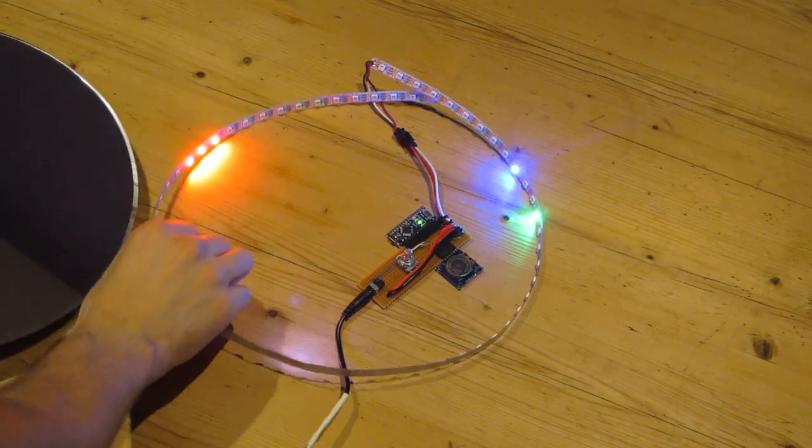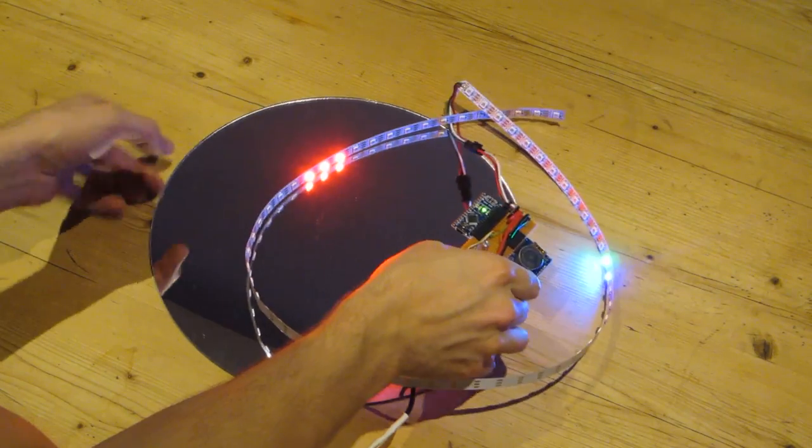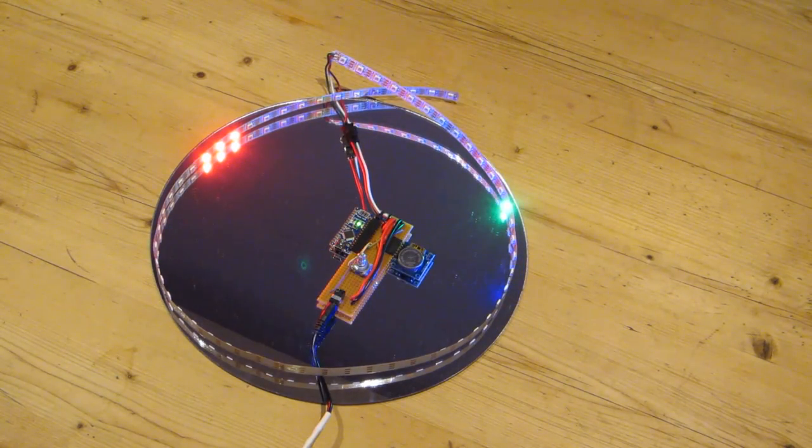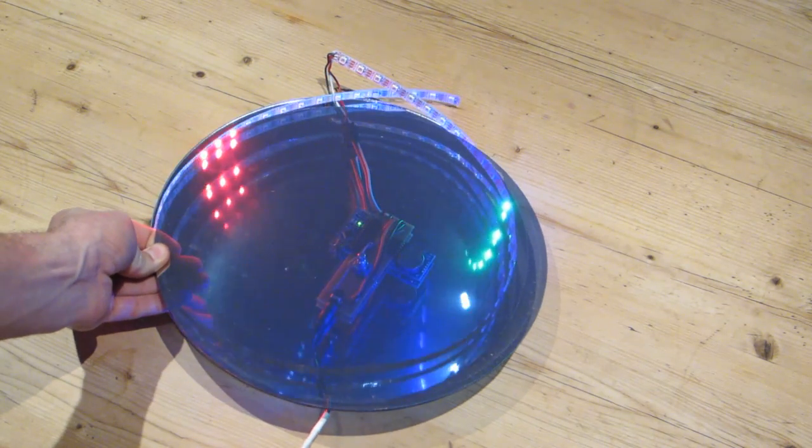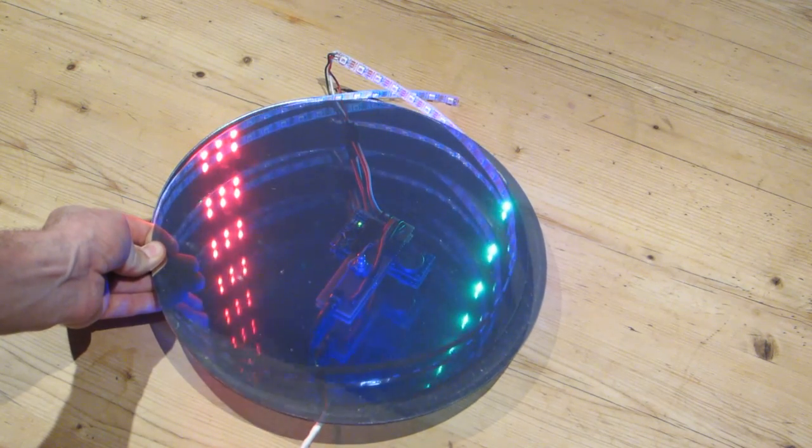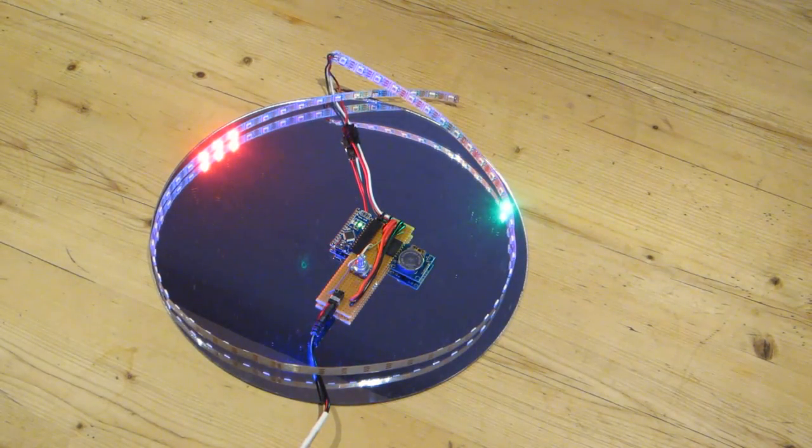So to make an infinity mirror out of it we are going to use a normal mirror underneath and then on top we are going to use a 50% one way mirror that allows part of the light to be reflected and part to be transparent.